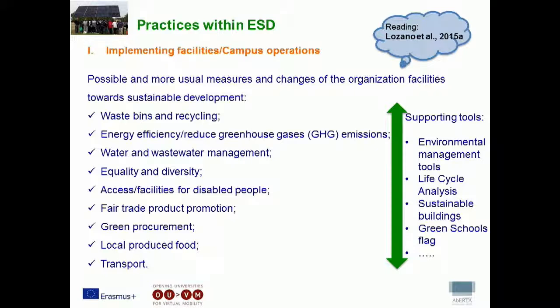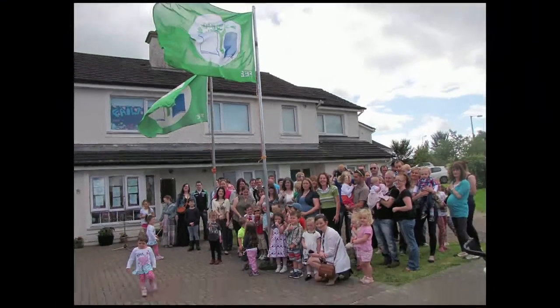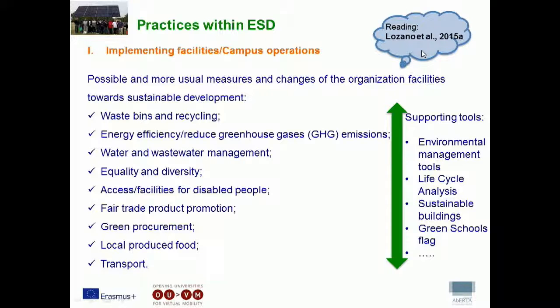But there are other important measures, namely related to equality and diversity — access and facilities for disabled people, local green procurement, or locally produced food, just as some examples. Supporting tools help organizations apply these kinds of measures, such as environmental management tools, life cycle analysis, sustainability building labels, and the most commonly used at primary and secondary schools: the green schools flag or the eco-schools flag. For this I advise you to read the Lozano et al. paper.